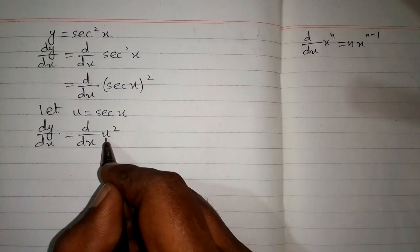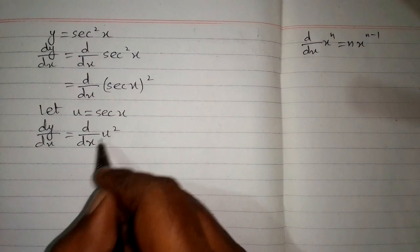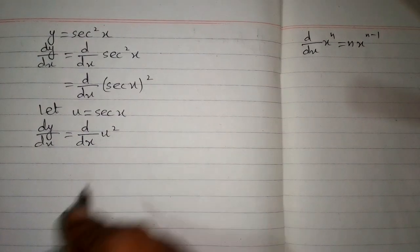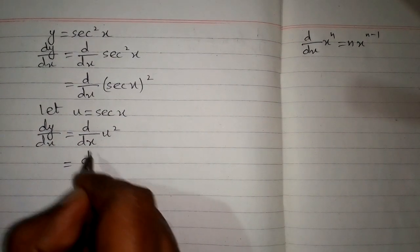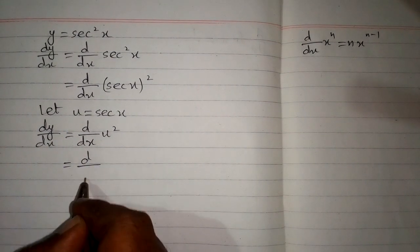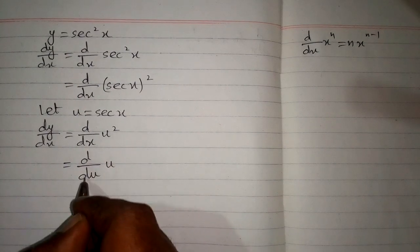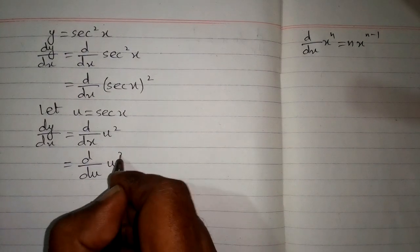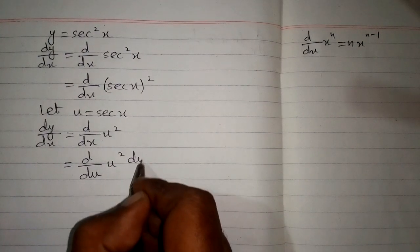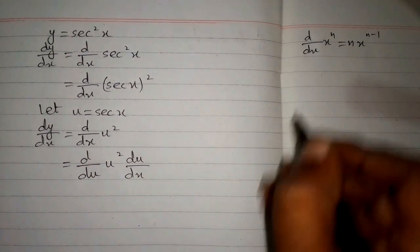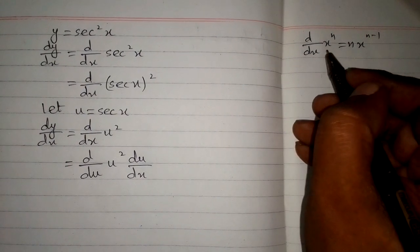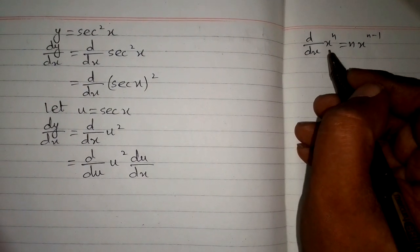We can see that u and x are not the same. So we replace dx with du, giving us dy/du of u² multiplied by du/dx. Now we can apply the power rule of differentiation.